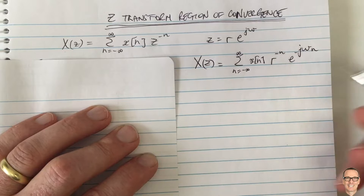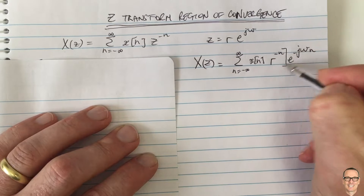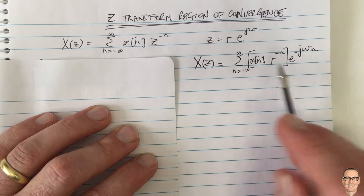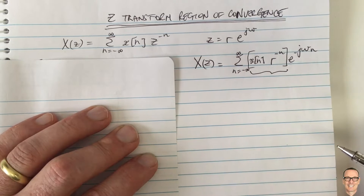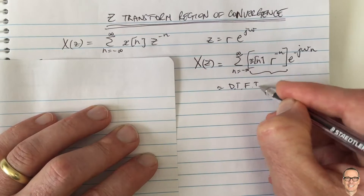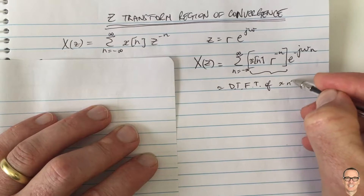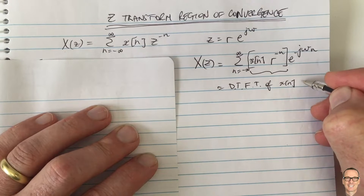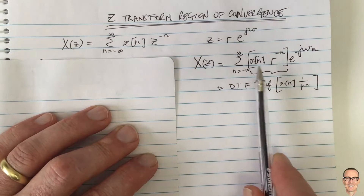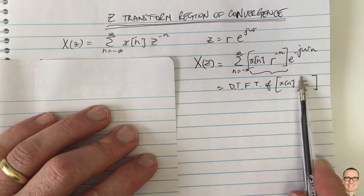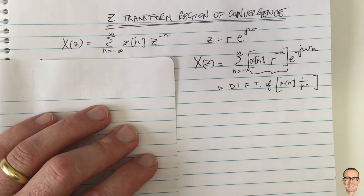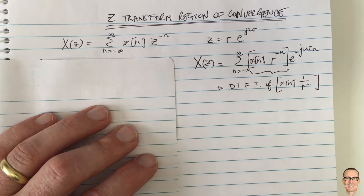If we put brackets around that expression, we can see this is the Fourier transform of the term in brackets — so this equals the discrete-time Fourier transform of x[n] multiplied by 1 over r to the n. So if you have a function and you multiply it by 1/r^n, then take the Fourier transform, you're doing the same thing as taking the Z-transform. This is an important concept.